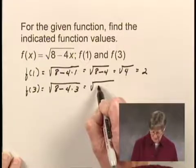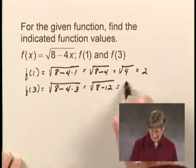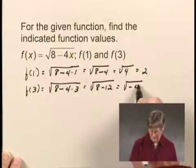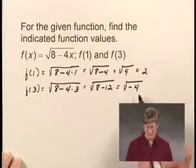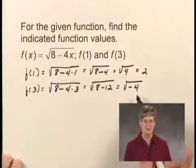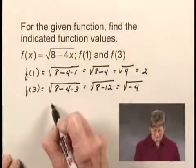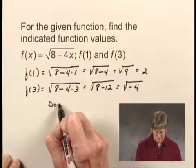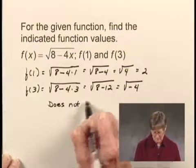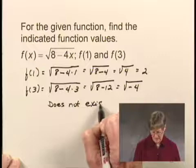This equals √(-4). And we know that negative numbers do not have real square roots. So we would have to say that f(3) does not exist as a real number.